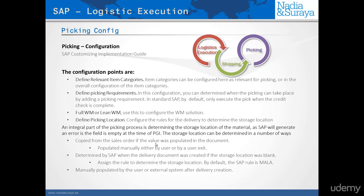It all starts from the sales order. When you create a delivery, it will look first to see if the storage location is populated in the sales order. It can either be populated manually in the sales order or you could determine it via user exit. In the sales order there is no automatic or configurable way to determine the storage location, so either you populate it manually or via user exit, and that will copy automatically into the delivery.